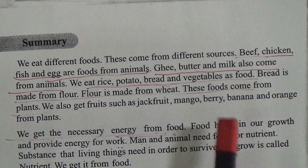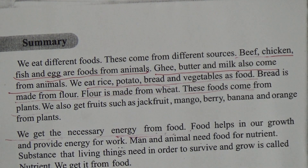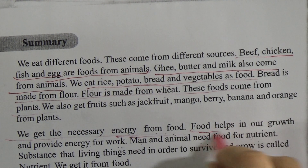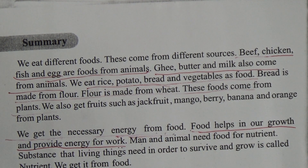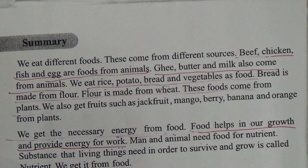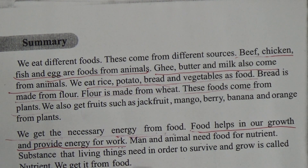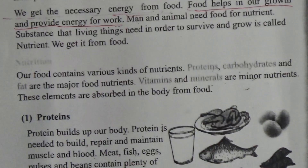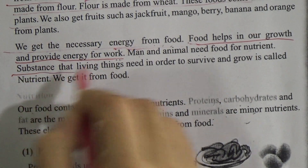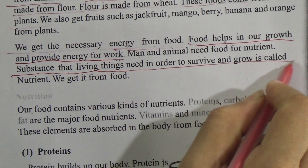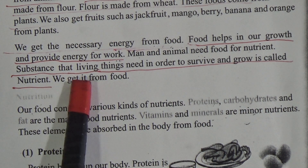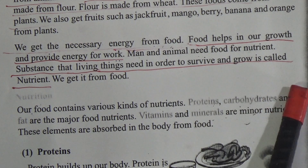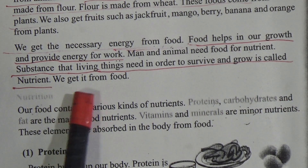Food helps in our growth and provides energy for work — underline this line. Man and animal need food for nutrients. The substance that living things need in order to survive and grow is called a nutrient. This is the definition of nutrient — you have to memorize it properly. We get nutrients from food.